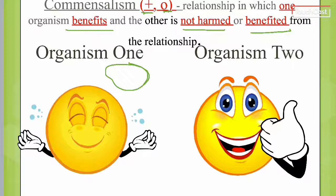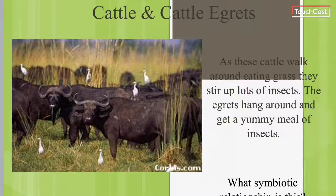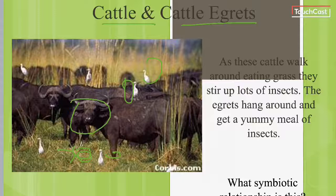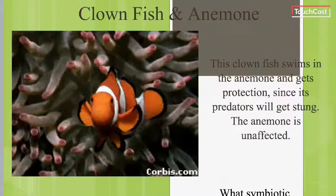Let's look at the cattle and the cattle egrets. As the cattle walk around eating grass, they stir up lots of insects. The egrets hang around and get a meal of insects. The cattle are heavy and cause insects to come up out of the ground, and the cattle egrets get all those insects. But what happens to the cattle? Nothing — nothing negative, nothing positive. That's a commensalistic relationship.